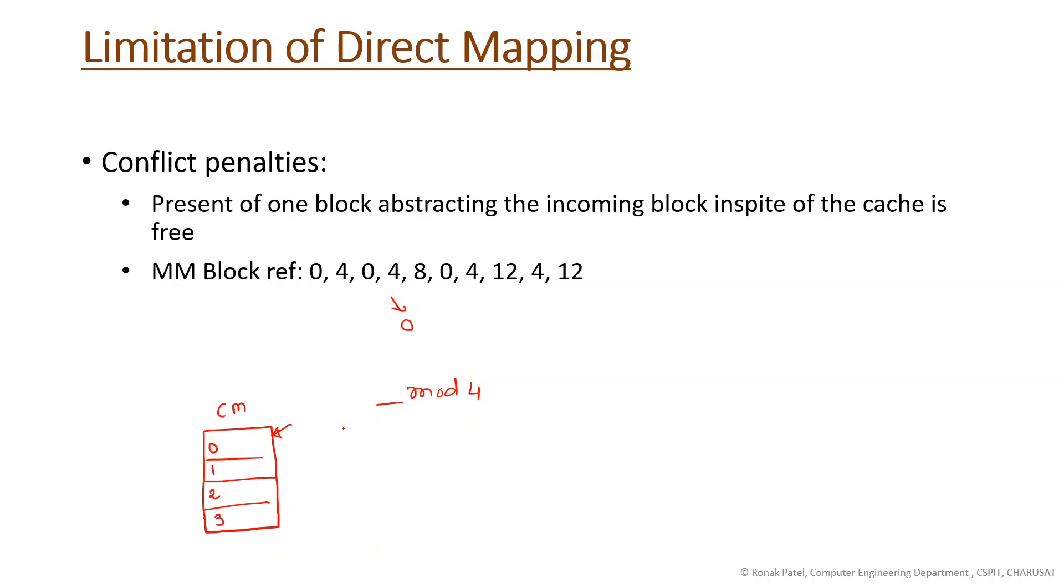We need to replace 0 with 4. This way you can see the pattern: 0, then 4, then 0, then 4, then 8, then 0. Even though we have three cache blocks that are empty, we're only using this one block.